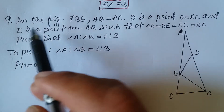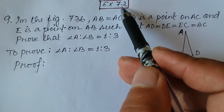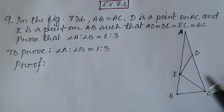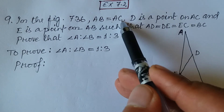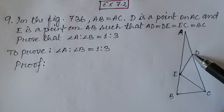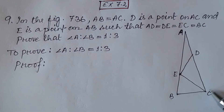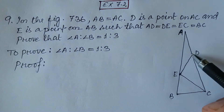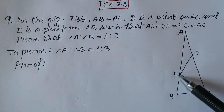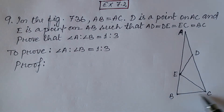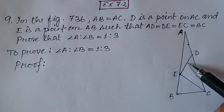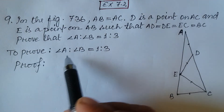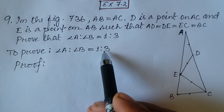This is question number 9, exercise 7.2 of class 9 mathematics. We are given a triangle ABC in which AB is equal to AC. D is a point on AC and E is a point on AB such that AD equals DE equals EC equals BC — these four line segments are equal. We have to prove that angle A to angle B is equal to 1 to 3.